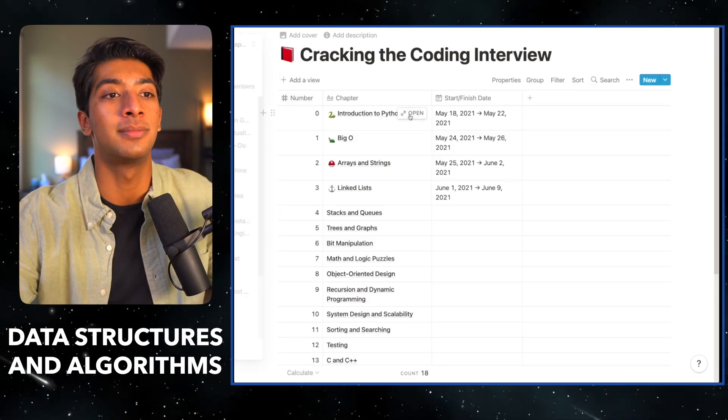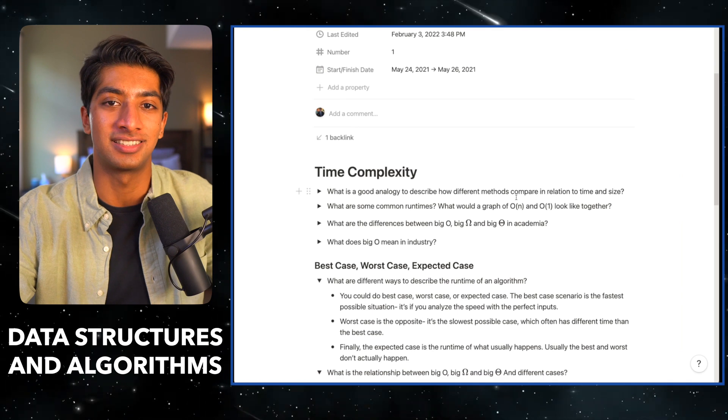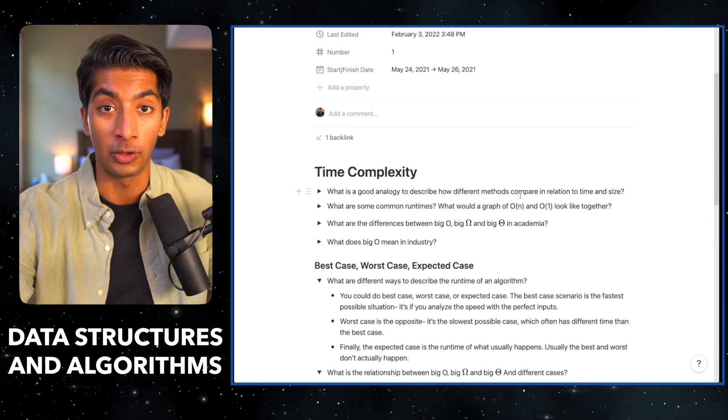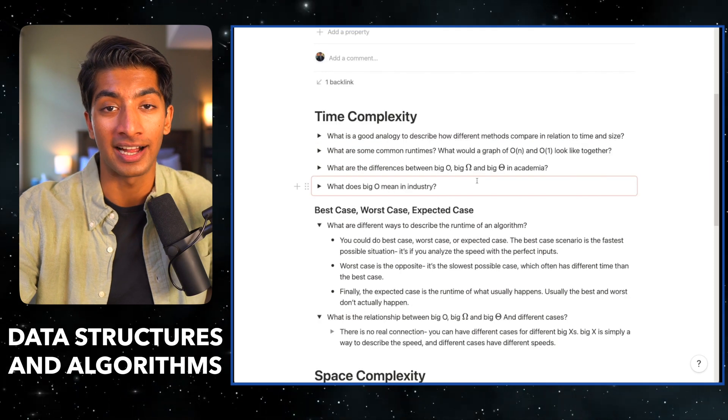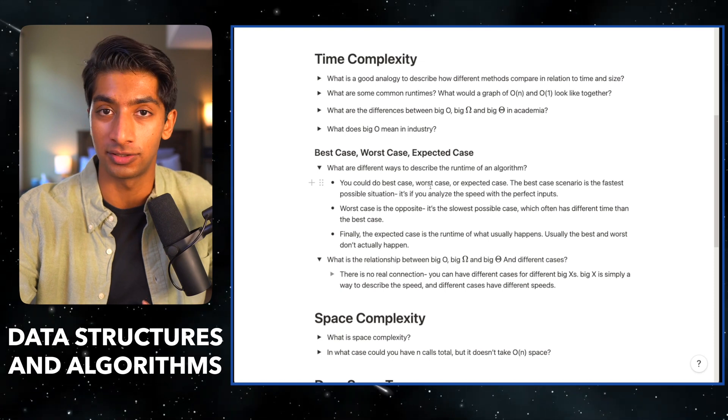The next part of studying for coding interviews is learning all your data structures and algorithms, and for that the Bible is Cracking the Coding Interview. This book goes into all the content you need to know to pass your interview — aside from LeetCode, it's your best resource. The way I take notes from this book is very similar to how I take notes from my classes. Let's go into this chapter on Big O — I use the toggle feature to write questions for myself. I'm using active recall here, so whenever I review this topic, I go through and open and close the toggles to quiz myself.